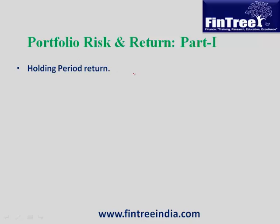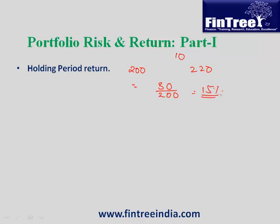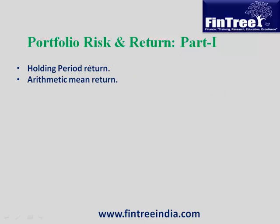Formula number one: holding period return. You purchase a stock for 200, you sell it at a price of 220 after having received a dividend of 10. So total return earned is 30 on an investment of 200, giving you a holding period return of 15%.